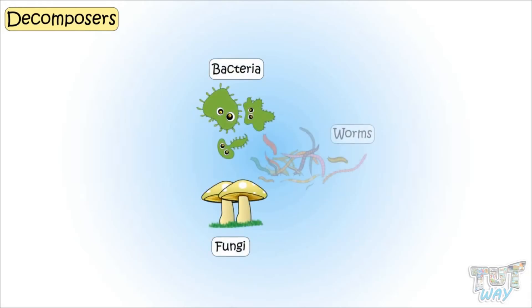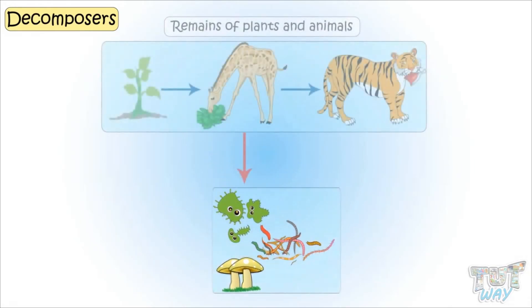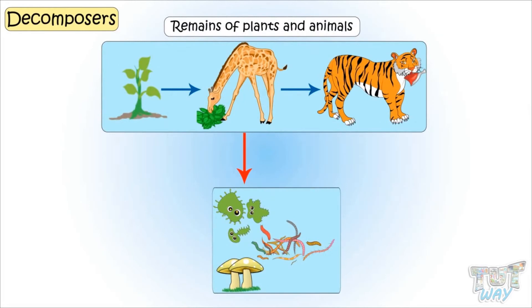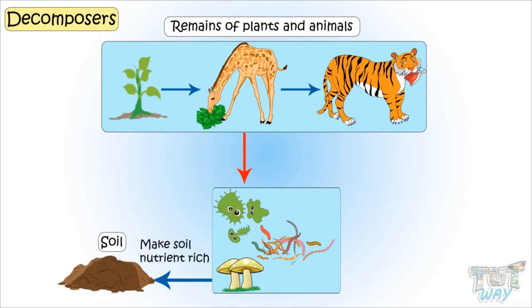Now let's see what are decomposers. Microorganisms like bacteria, fungi, and even worms eat the dead animals and plants. And when they eat these dead remains of animals and plants, they convert them into particles that again become part of the soil and make the soil nutrient rich, which is again used by plants to grow and make food. Thus, there is a flow of energy in the form of a cycle that never ends.